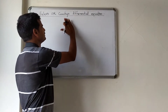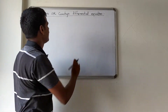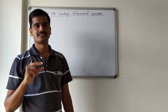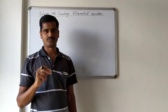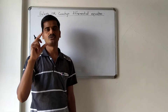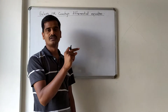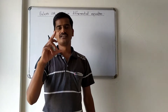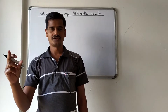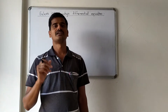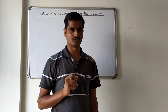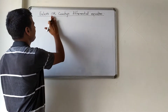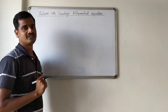First of all, I will explain how to identify that a given differential equation is Euler's or Cauchy's differential equation. Once we notice that it is in this form, we will use substitution to transform it into a linear differential equation with constant coefficients, then get the complementary function and particular integral, and finally the solution. Now I state the format of this Euler's or Cauchy's differential equation.